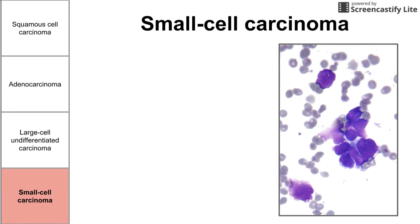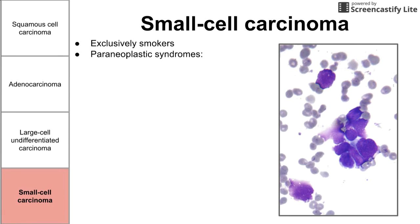Now, those previous three were the non-small cell carcinomas. Now we're going to be talking about small cell carcinoma. Small cell carcinoma, like squamous cell carcinoma, exclusively occurs in smokers. It has a variety of paraneoplastic syndromes that you might see with it. These paraneoplastic syndromes are related to a neoplasm — related to a cancer — but not directly affected by the size or mass of the tumor. They are systemic effects that might be caused by having cancer.